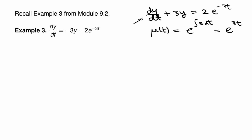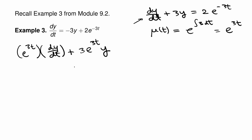The magic function is e^(3t), so we have e^(3t) times dy/dt plus 3e^(3t) times y, and that equals 2e^(3t) times e^(-3t). You can see that the e^(3t) and the e^(-3t) are going to cancel, and we're just going to be left with the constant 2 on the right-hand side.